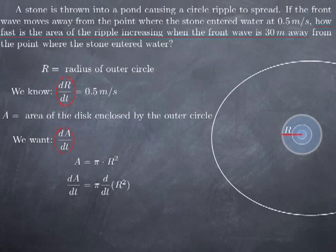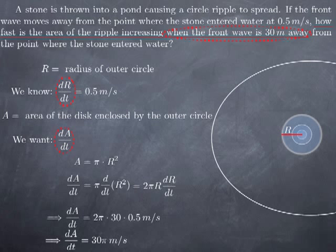A is a function of time, so on the left-hand side I just get the derivative of A with respect to time. On the right-hand side, I have the multiplicative constant pi multiplied by the derivative of R squared. Here R is a function of time, so R squared is the square of a function. To differentiate that, I need to use the chain rule, and I get 2R multiplied by the derivative of R. We now have the rate of change of A as a function of R and the rate of change of R. We know dR/dt and we are asked to find dA/dt when R is 30 meters. Plugging in values, we get 2π times 30 times 0.5 — in other words, 30π meters per second.